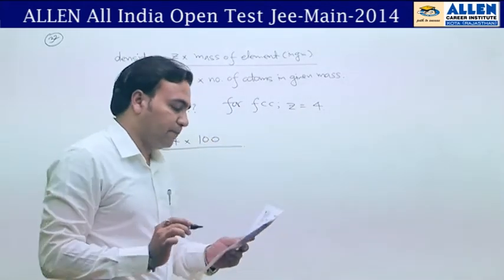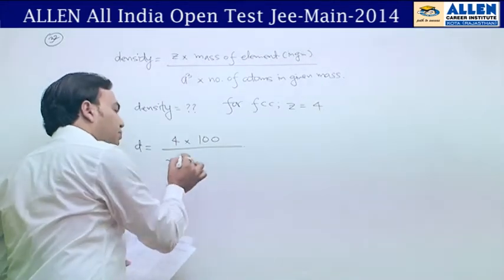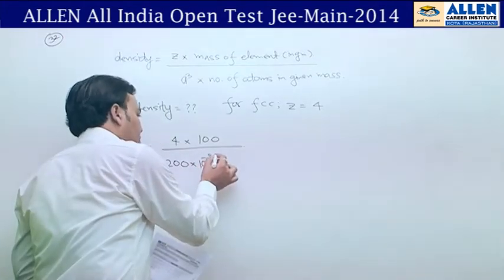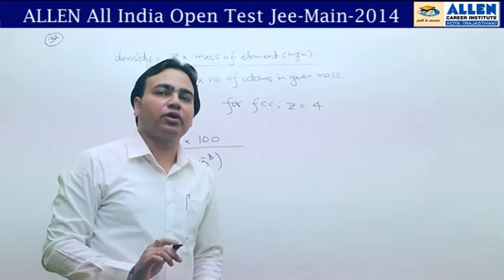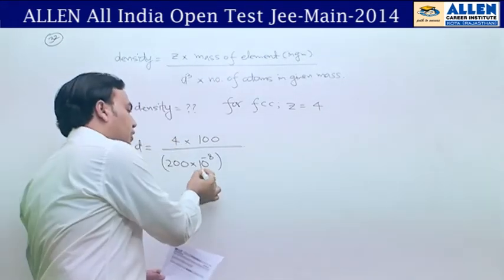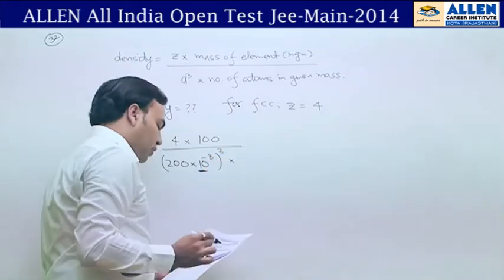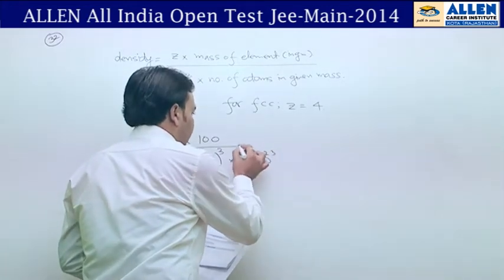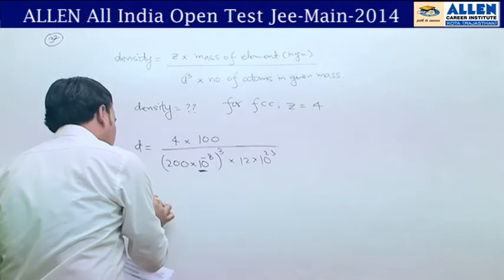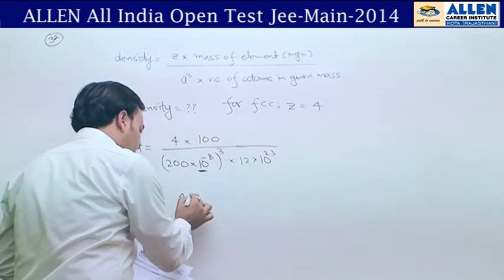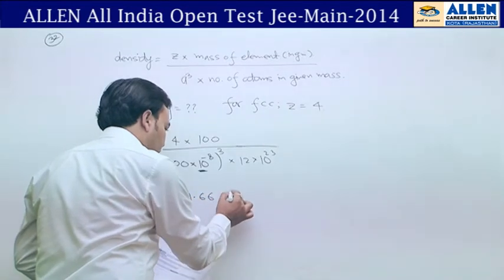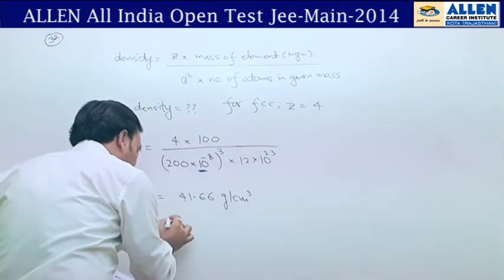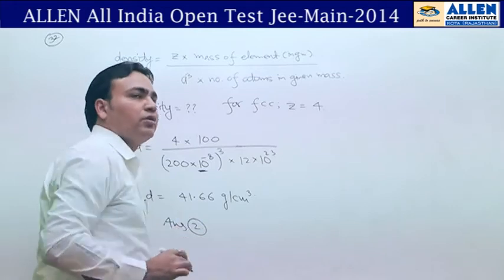A is given in picometers, so we have to convert it to centimeters, because the unit required is grams per centimeter cube. Dividing by Avogadro's number, 6.022 × 10²³, and after solving, we get approximately 41.66 g/cm³. The answer is the second option, so option 2 is correct.